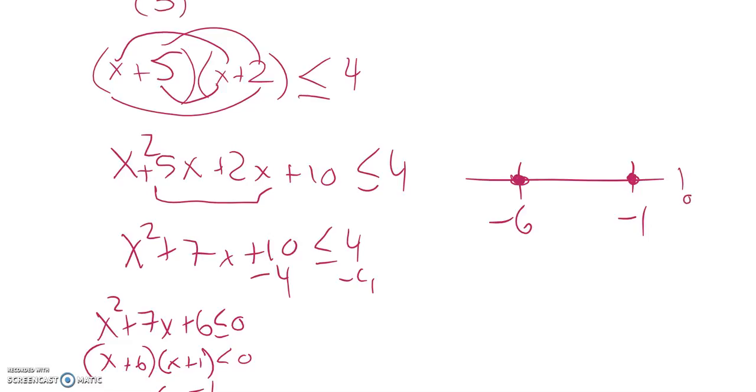0 plus 5 is 5. 0 plus 2 is 2. 10 is not less than 4. 0 doesn't work. So it must be in between these two, which means that negative 6 is less than or equal to x, which is less than or equal to negative 1.